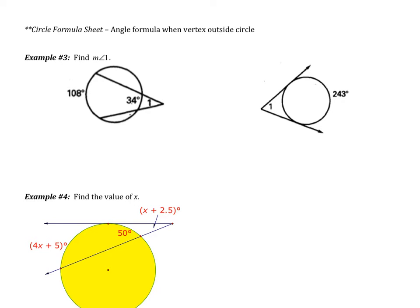This goes on your formula sheet: the angle formula when the vertex is outside of the circle. If the vertex is outside of the circle, the angle is equal to one half of big arc subtract little arc.